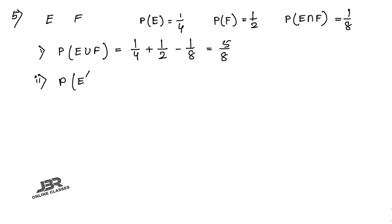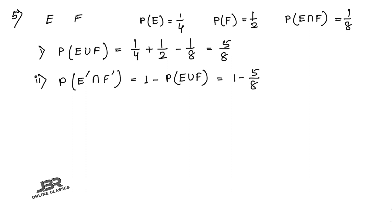Part two: find P(not E and not F), which is P(E complement ∩ F complement). This equals 1 − P(E∪F) = 1 − 5/8 = 3/8.